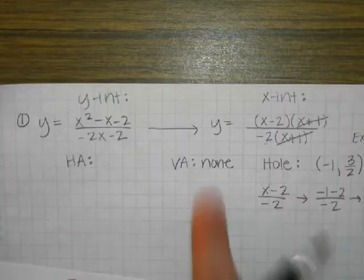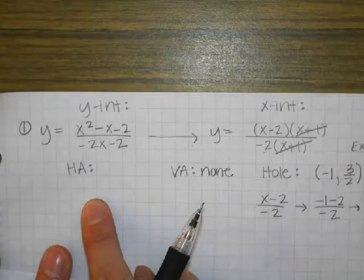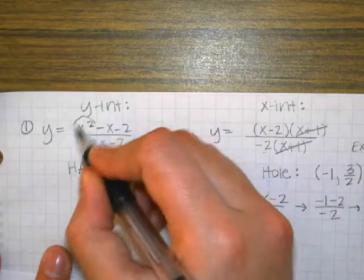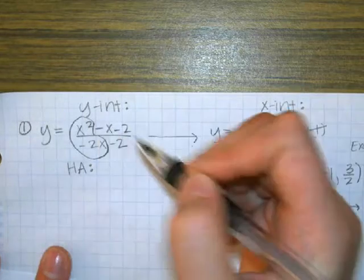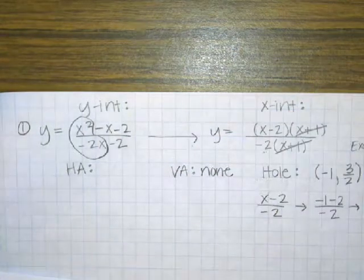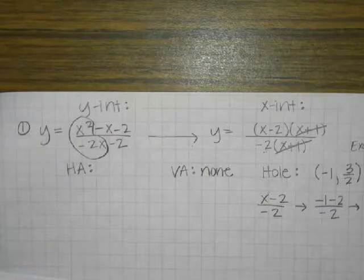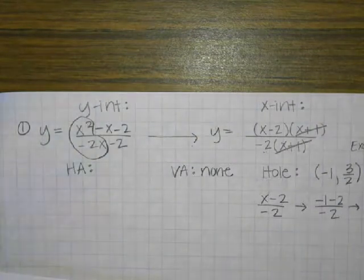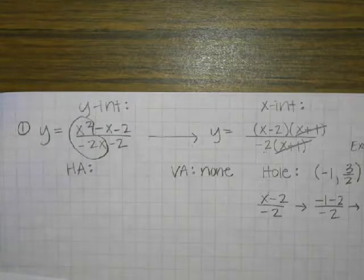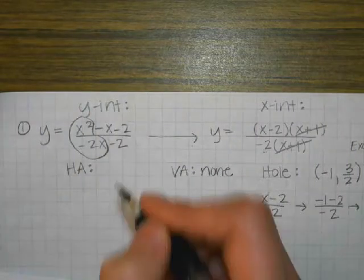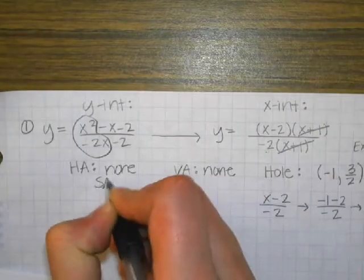So over here, we've got the vertical asymptote. How do we find the horizontal asymptote? So you're looking at the first one — the X on the top has a degree of 2, the X on the bottom has a degree of 1. And so what does that tell us? There are none. The top is bigger, so we're going to say none. And then instead, there must be a slant or an oblique asymptote.